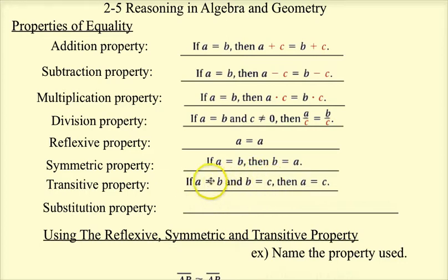You're sort of just canceling out that B. Or you might want to say that you're substituting in the B. Since A equals B, I'm going to substitute B in for A, so that's why A equals C. And the substitution property, if A equals B, then B can replace A in any expression.